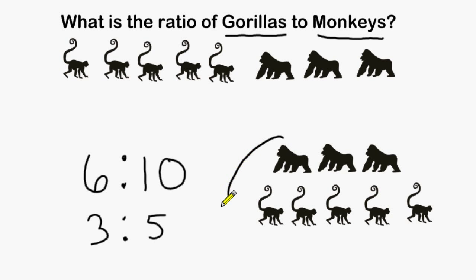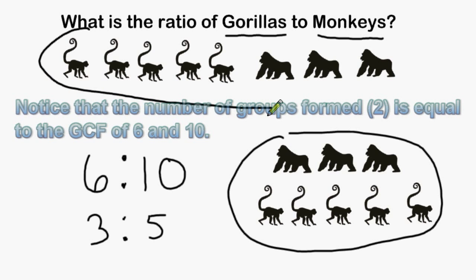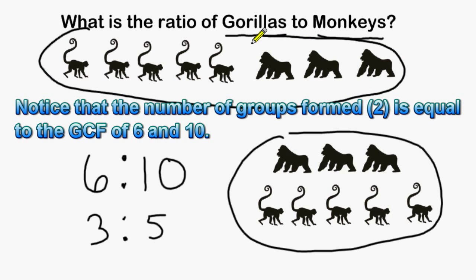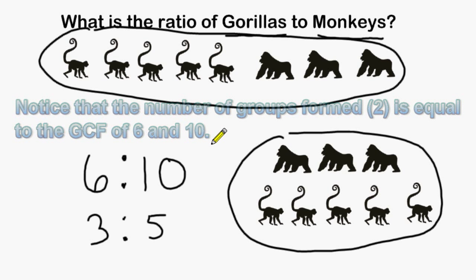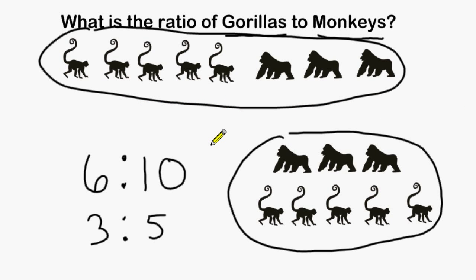We can see in this group right here there are exactly three gorillas for every five monkeys. And what we have remaining up here are also three gorillas for every five monkeys. So the ratio of gorillas to monkeys in this problem is 3 to 5 in its most simplified version.